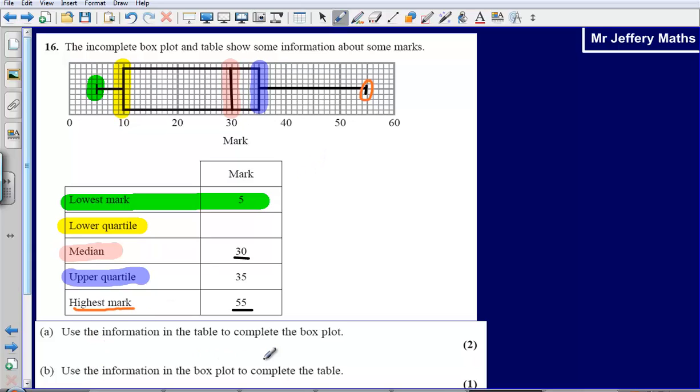So we're asked to use the information in the box plot to complete the table. We need to find the lower quartile that's missing. So we can see here that the box starts at 10. That's where our lower quartile is. So our lower quartile will be 10.